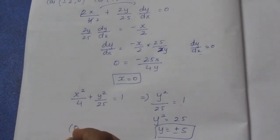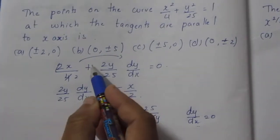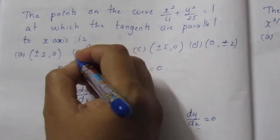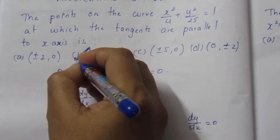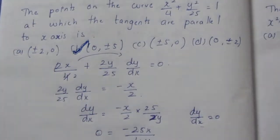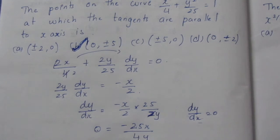So the point will be (0, ±5), which is in option b. (0, ±5) is in option b. So option b is the correct answer for the sum. That is all with the sum. Thank you.